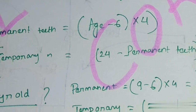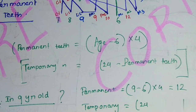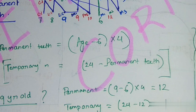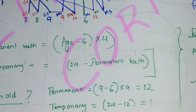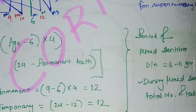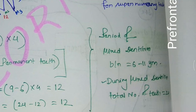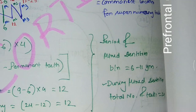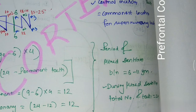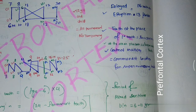For example, in a nine-year-old child: permanent teeth = (9 − 6) × 4 = 12, and temporary teeth = 24 − 12 = 12. The period of mixed dentition is between 6 to 11 years of age. During mixed dentition, the total number of teeth always equals 24. After age 12, there are no temporary teeth — all are permanent.